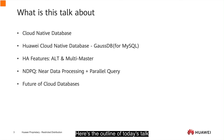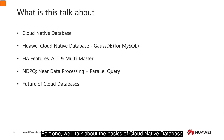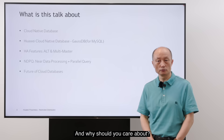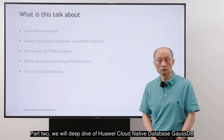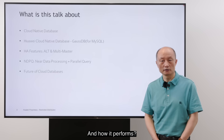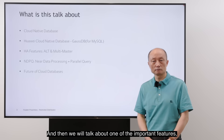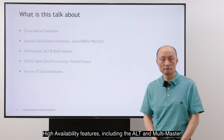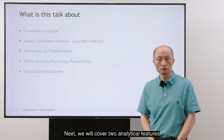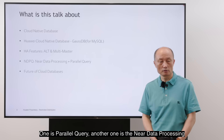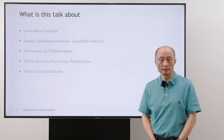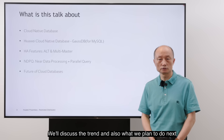Here is the outline of today's talk. We are divided into five sections. Part one, we will talk about the basics of cloud-native database — what it is and why you should care. Part two, we will deep dive into the cloud-native database GaussDB, how it works and how it performs. Then we will talk about high availability features, including ALT and multi-master. Next, we will cover two analytical features: parallel query and near data processing. At the end, we will discuss the future of cloud database, including trends and what we plan to do next.